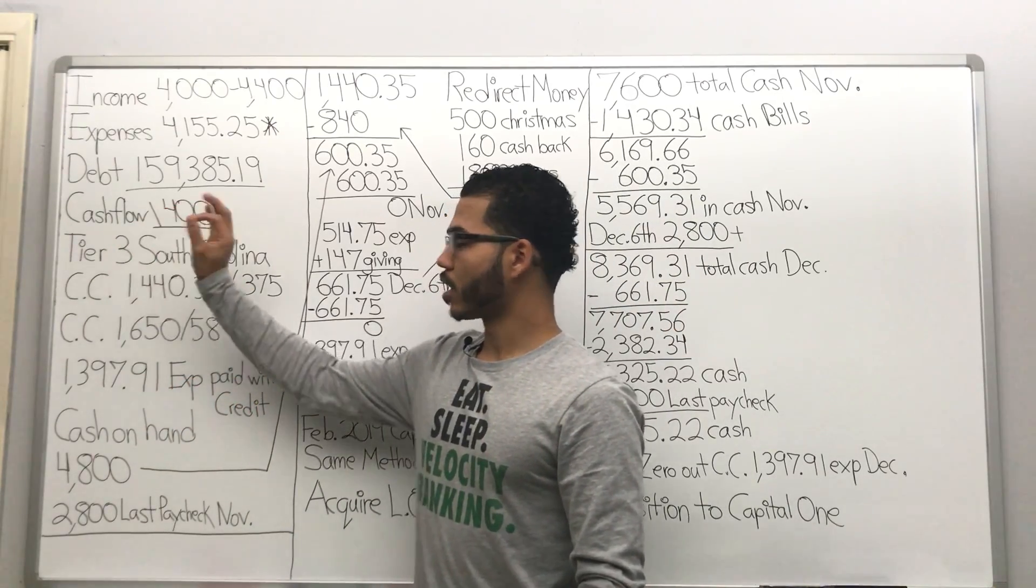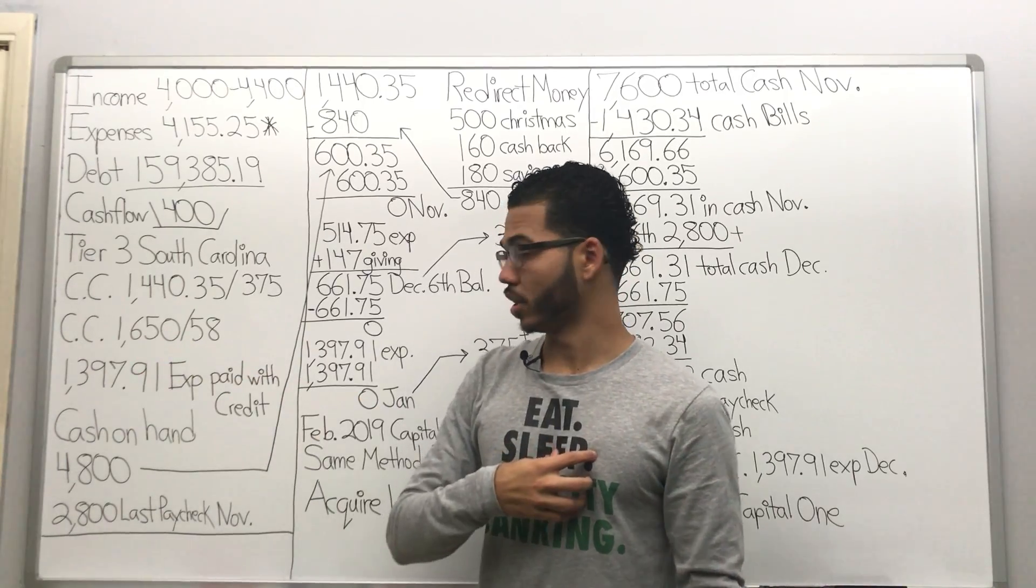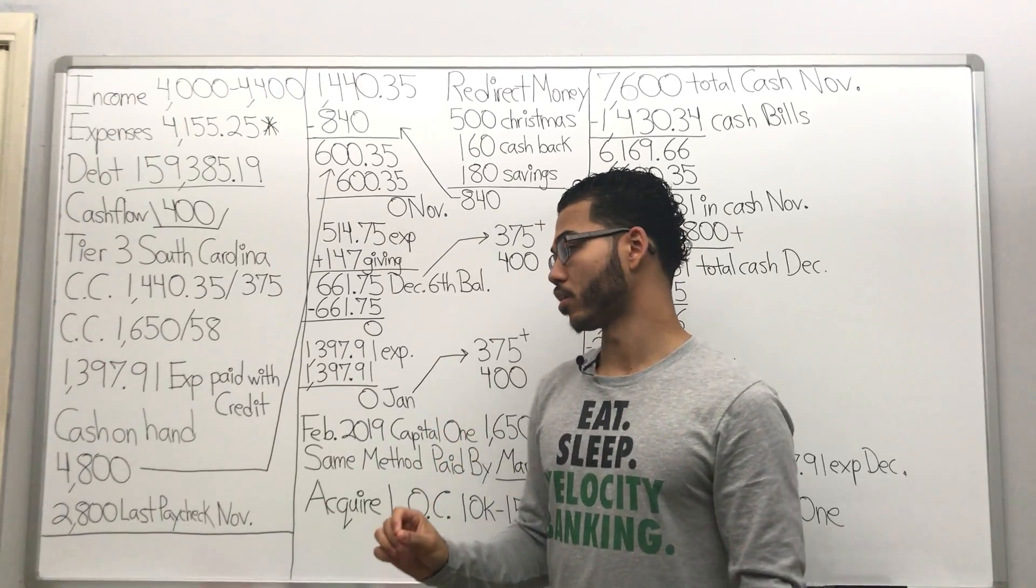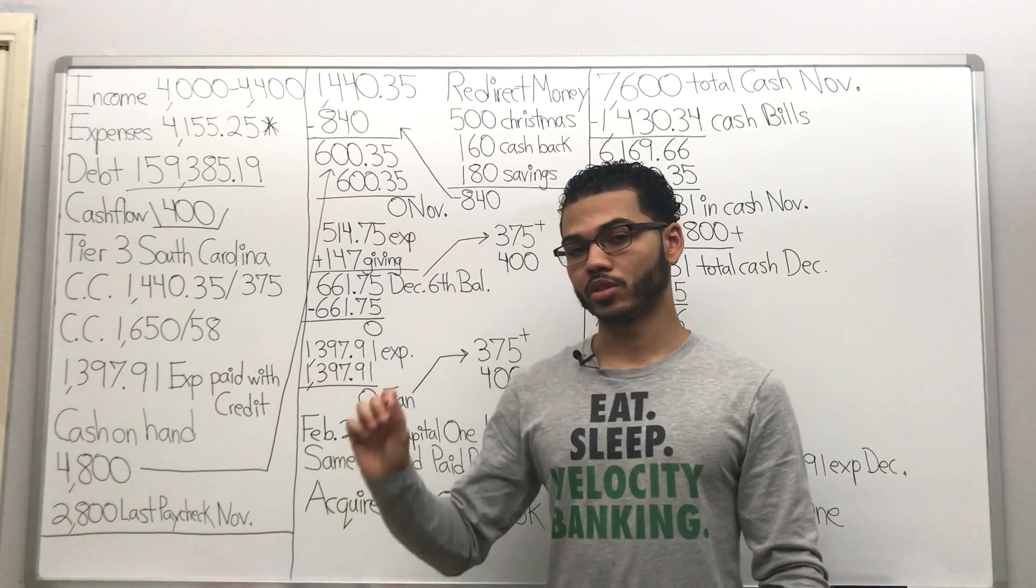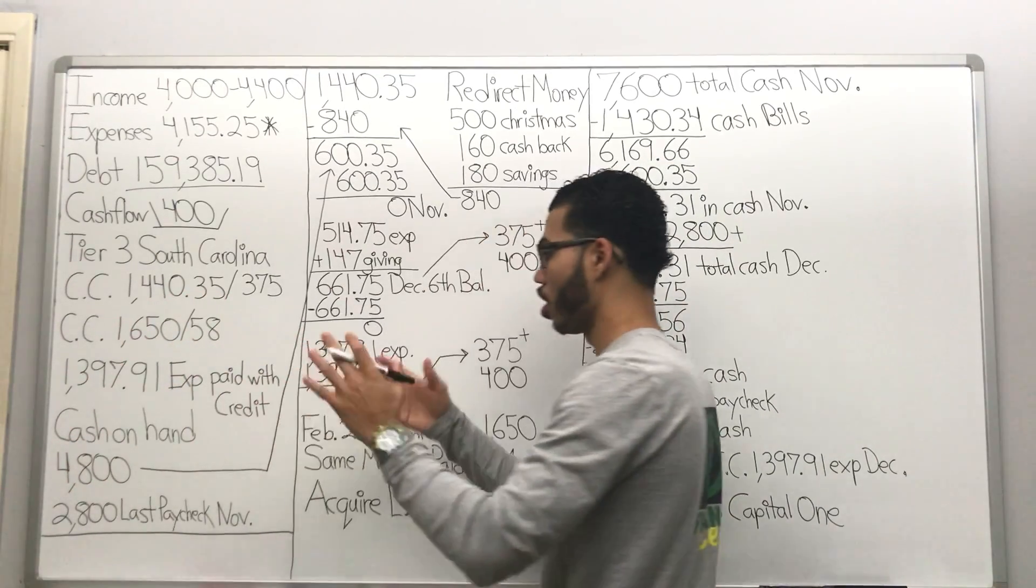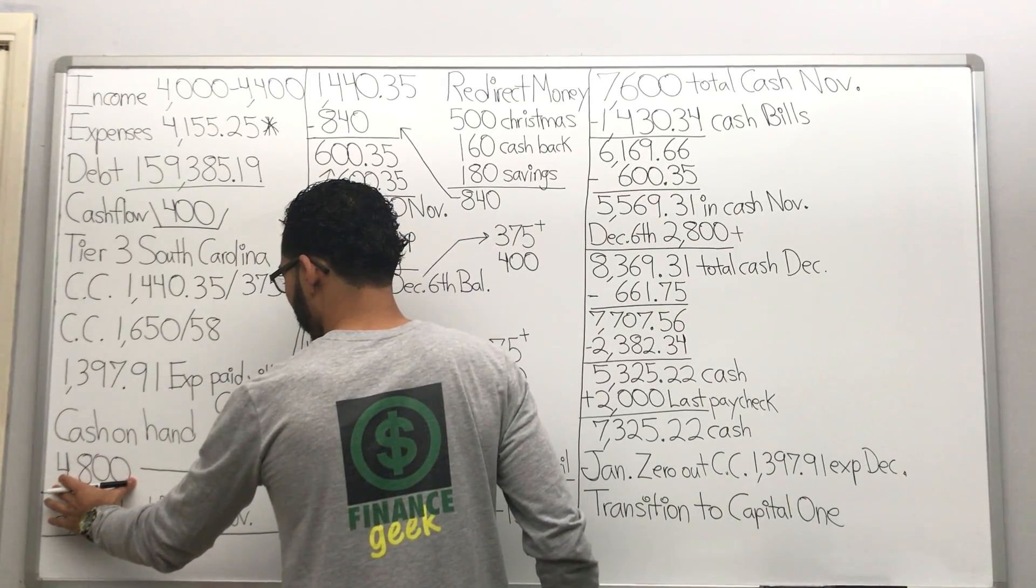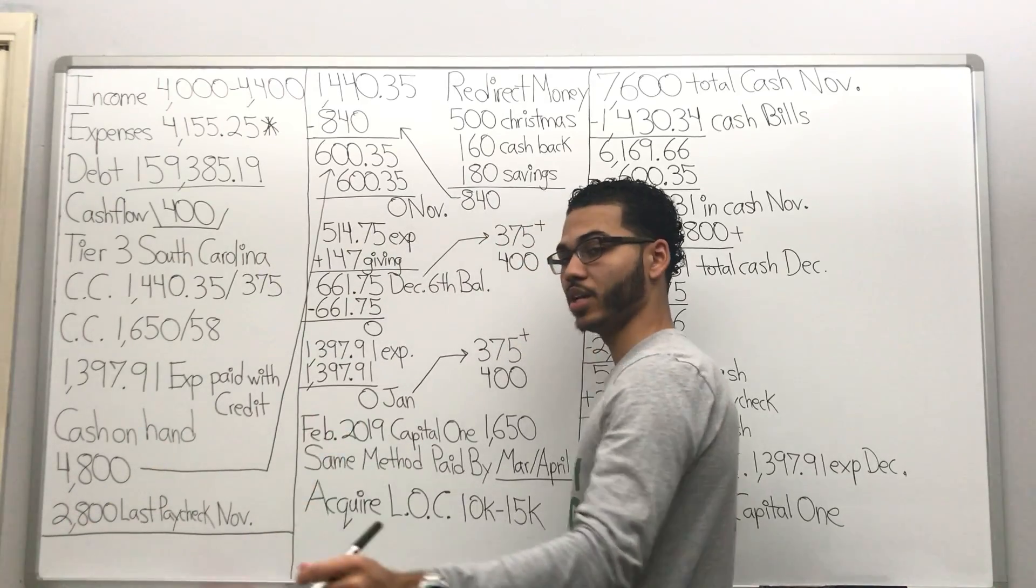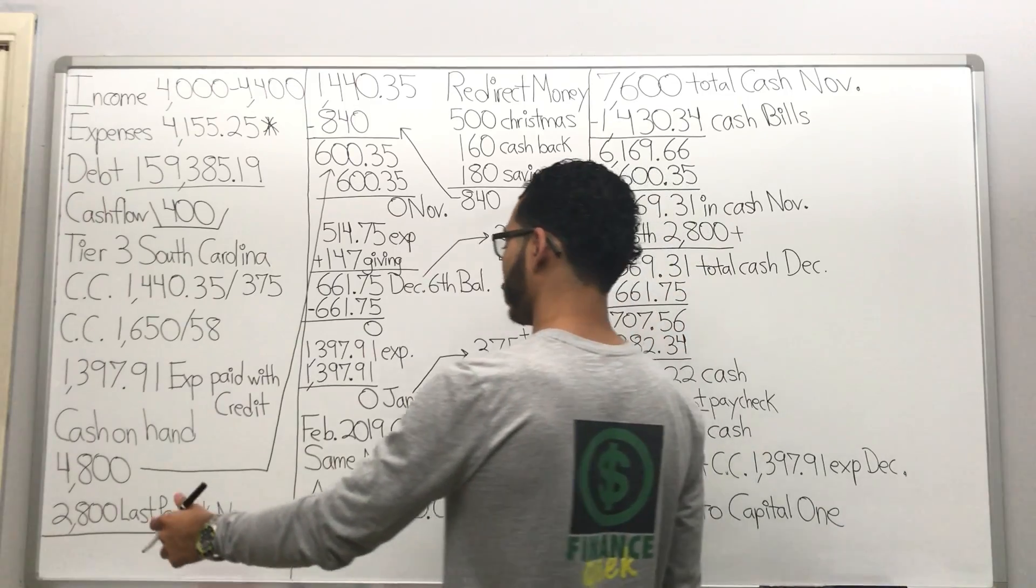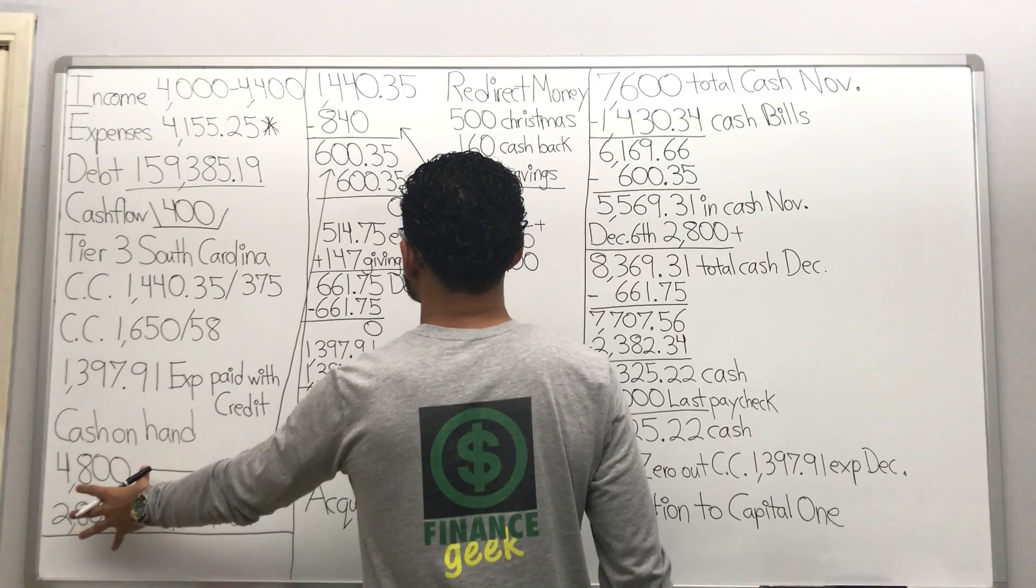Currently, including the contribution at the tier three level for working with me, her total expenses that we can pay with a credit card are $1,397.91. Current cash on hand in the month of November, we currently have $4,800. And we're gonna get another paycheck before November ends of $2,800.